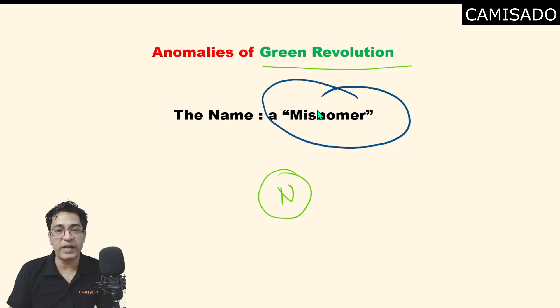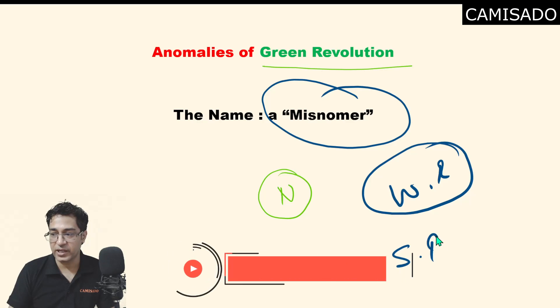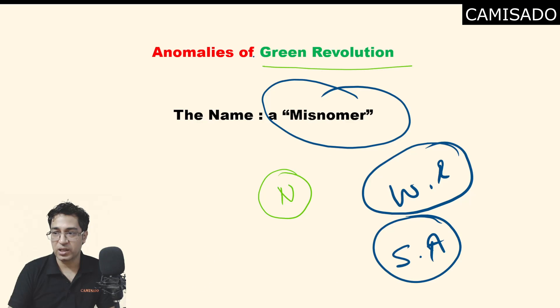Misnomer means a name that is not very appropriate. The reason for this is that the green revolution was essentially a wheat revolution. We could have simply called it a wheat revolution. Since this new revolution required a lot of fertilizers, pesticides, and hybrid seeds, we could have called it scientific agriculture, but not essentially green revolution.